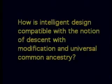How is intelligent design compatible with the notion of descent with modification and universal common ancestry? Intelligent design simply says that you think a particular system was planned and put together by some intelligent agent. It does not say exactly how that was accomplished.